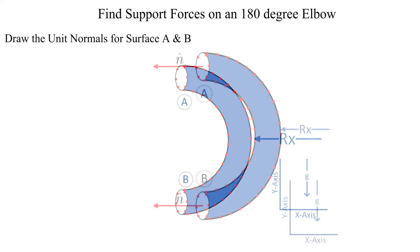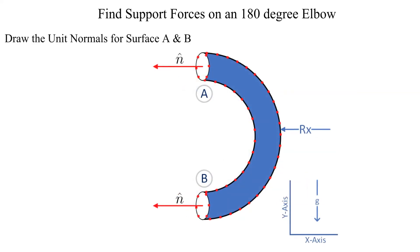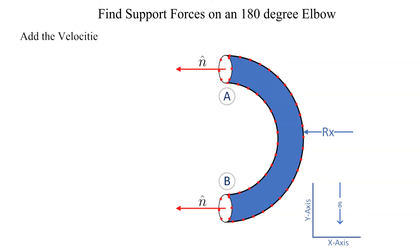Next identify the unit normal outward vectors for surfaces A and B. Next let's add the velocities, the density, and the pressures at A and B.